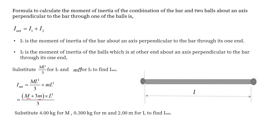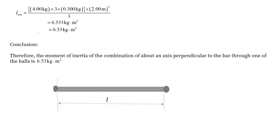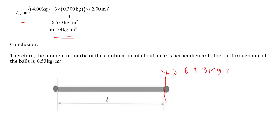Substituting the values, the moment of inertia comes out to be 6.53 kg meter square. Hence, the moment of inertia of the combination about an axis perpendicular to the bar through one of the balls is 6.53 kg meter square.